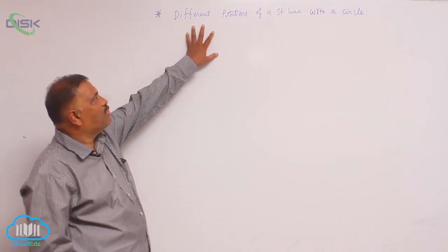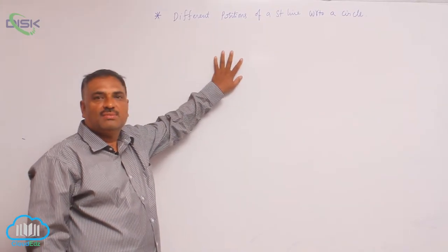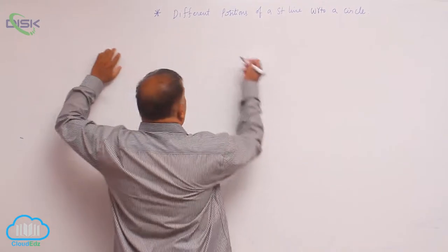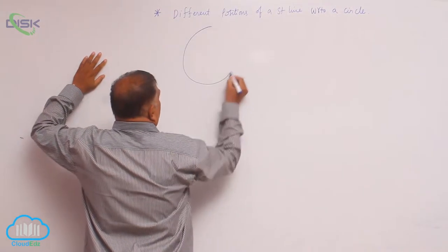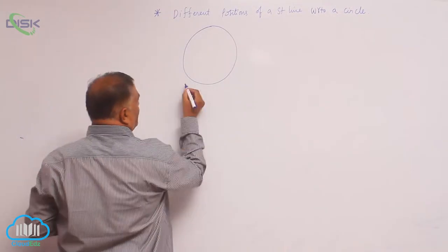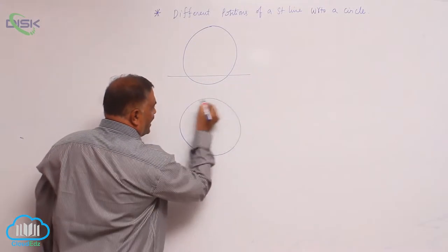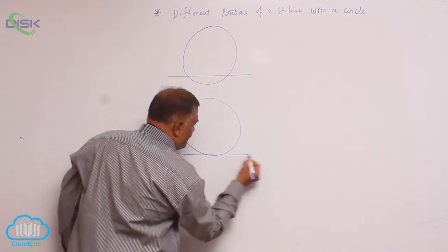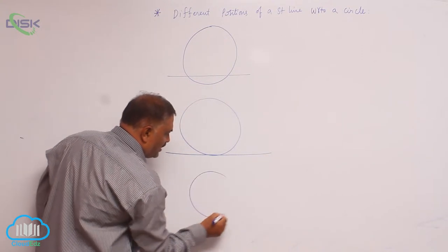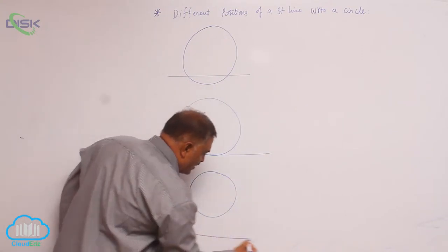We will discuss the different positions of a straight line with respect to a circle. Now suppose the circle will be like this. A straight line can intersect the circle, or the straight line can touch the circle, or the straight line can be outside the circle.